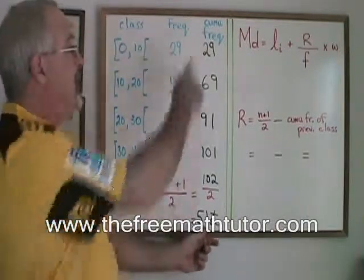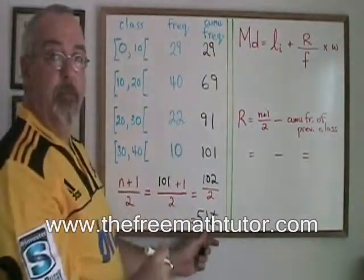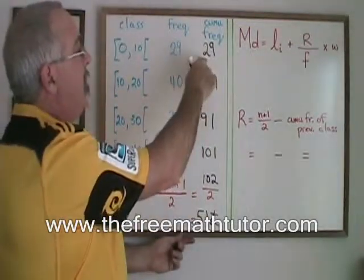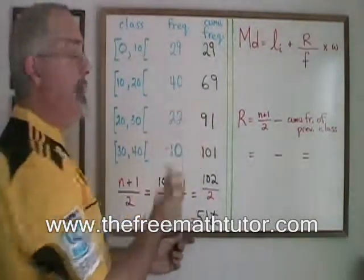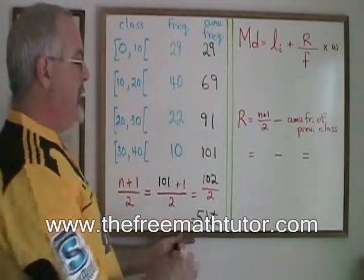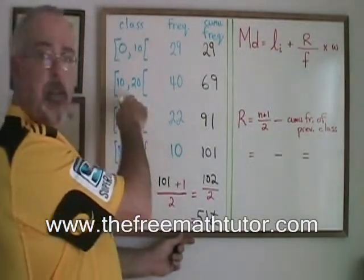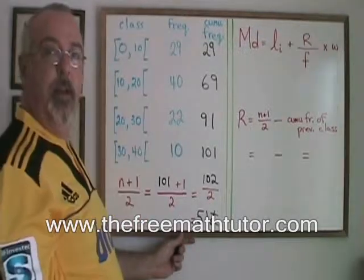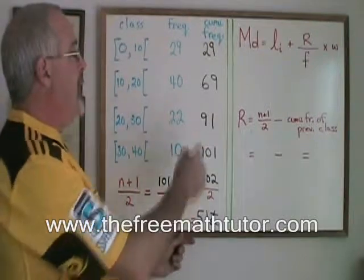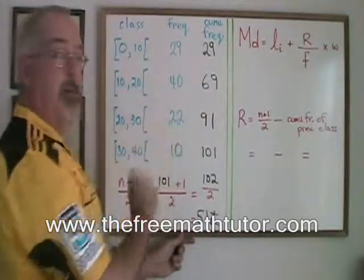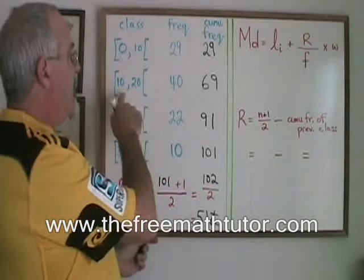Since the median is the 51st of these data values, there's no way the median can be one of these first 29. But once we get to the cumulative frequency of the second class, we have gone past the 51st value. We have reached 69. So what that tells us is that the 51st data value, which is our median, is somewhere in this class. This is our median class. Because it has to be larger than the first 29 values, but it has to be smaller than the 70th value, which would be down here. So we have identified our median class and it is the class 10 to 20. This tells us a lot of the information that we need in order to calculate the median of this data.